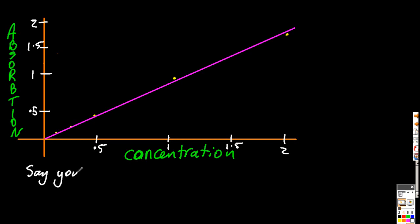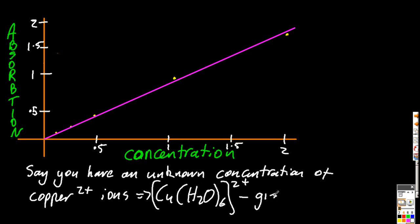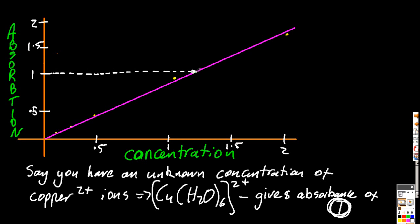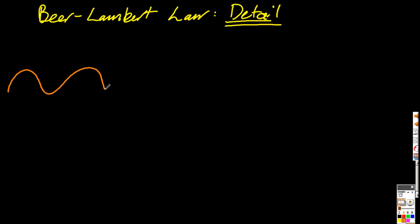So if I had an unknown sample — it has to be the same chemical, of course, but with an unknown concentration — if it has an absorption of one, then I can use my graph to calculate the concentration. Dotting along, dotting down, it's about 1.2 molar, my unknown concentration.